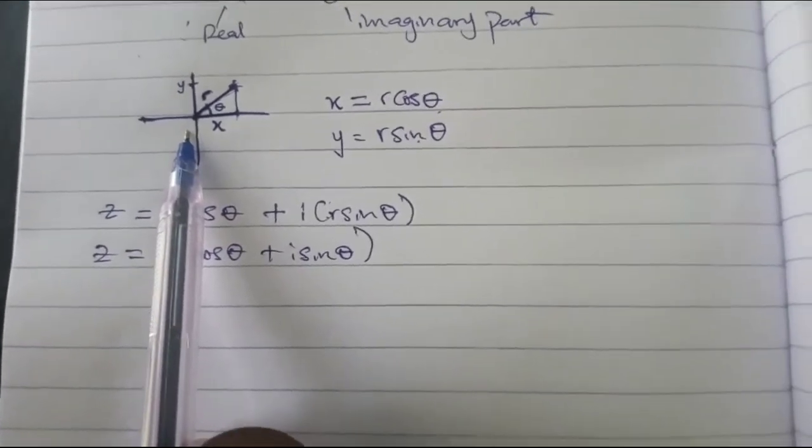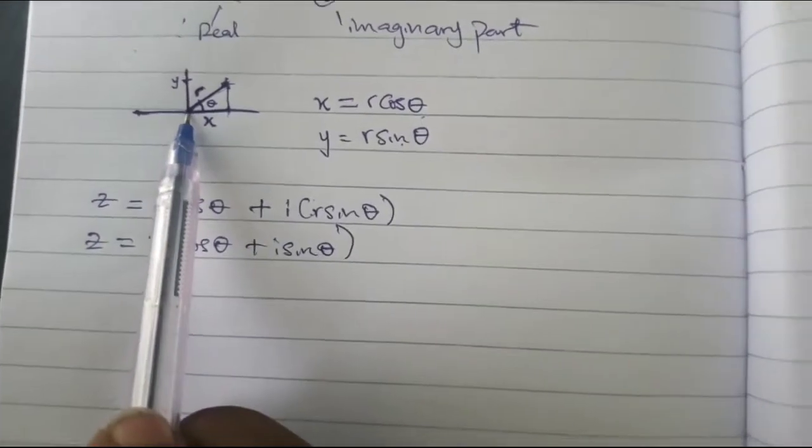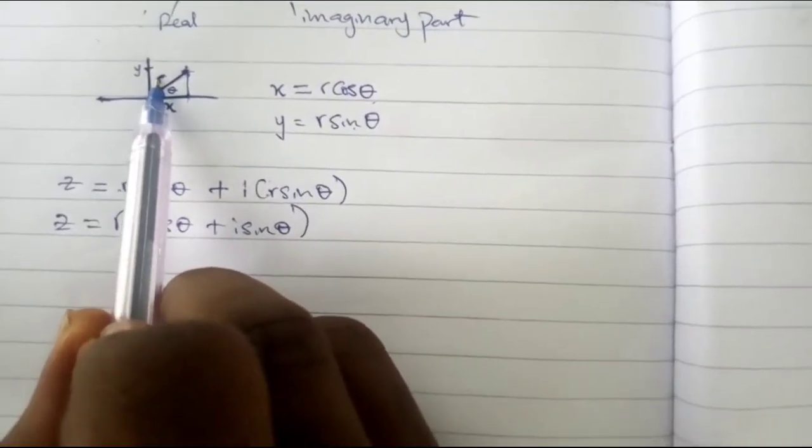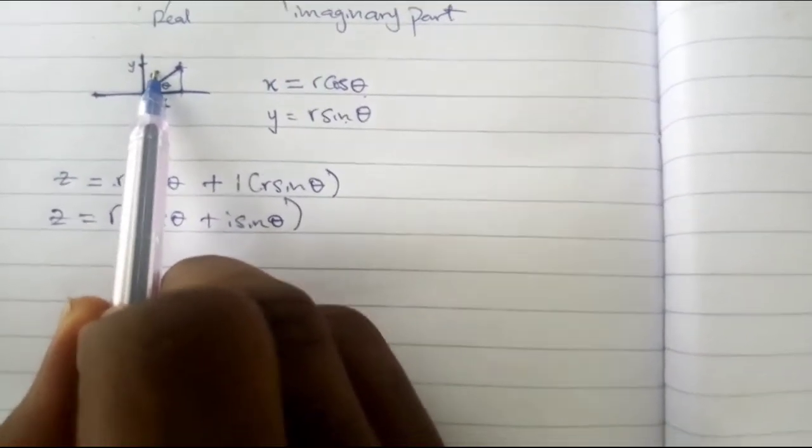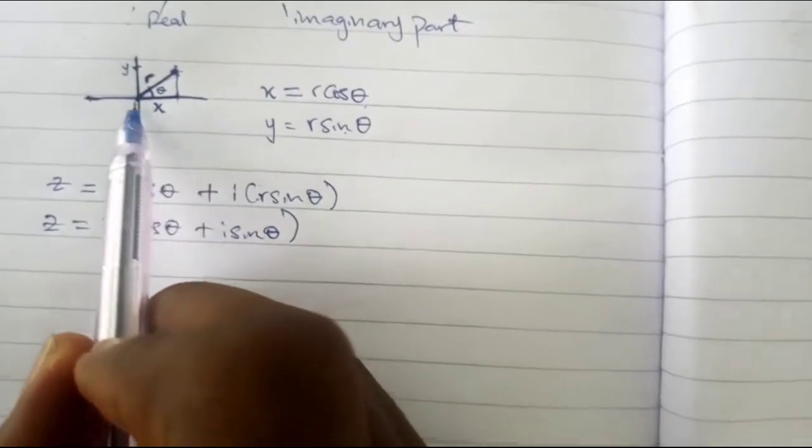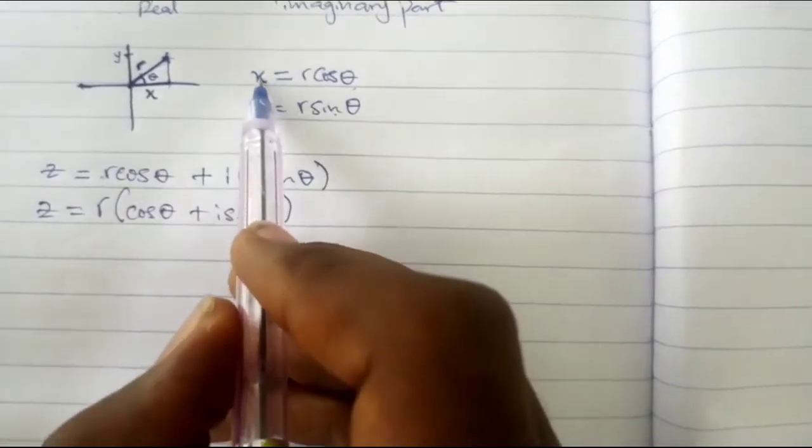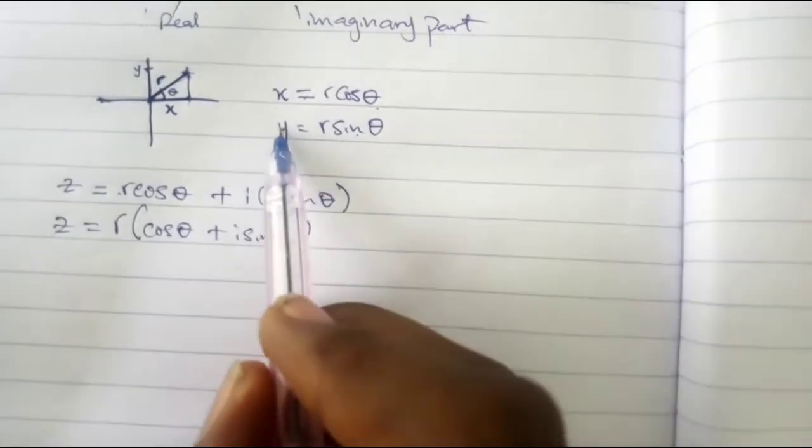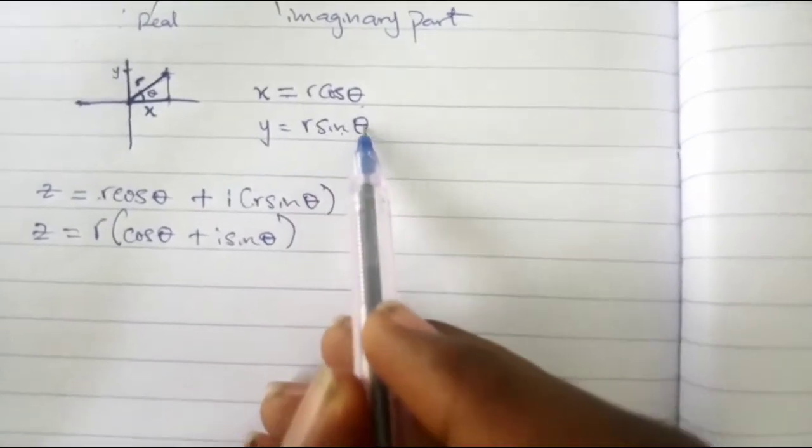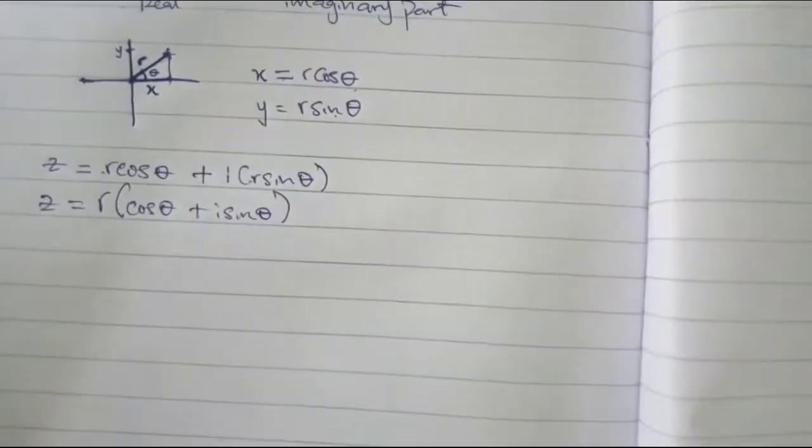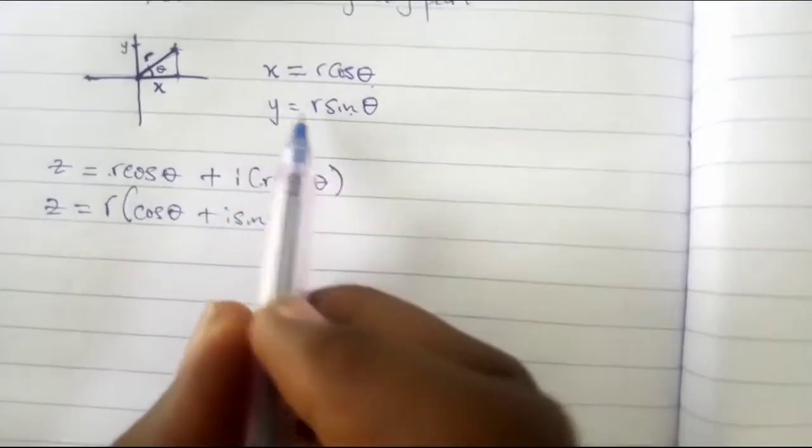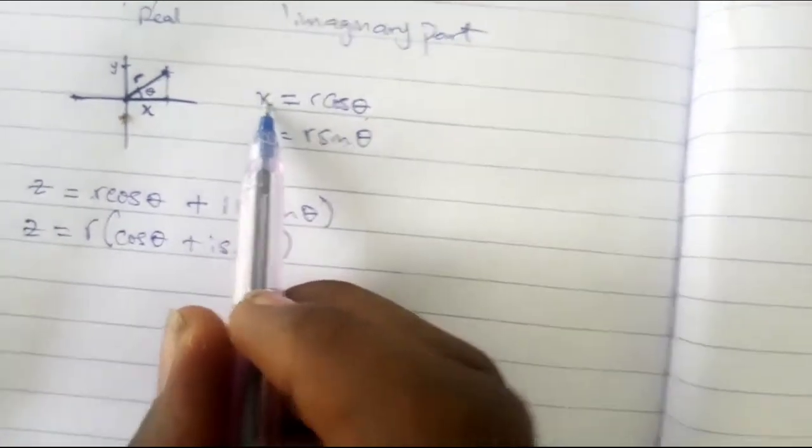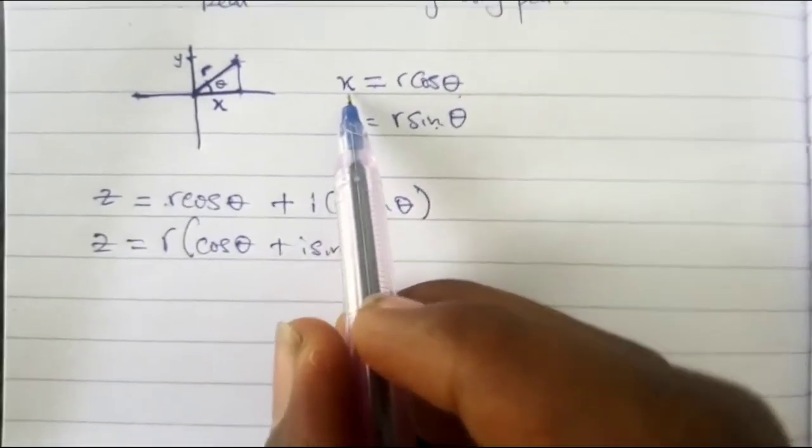Looking at this argand diagram which we have done earlier in this video, r is the magnitude. Resolve this r into its horizontal and vertical components. We'll have the horizontal component x is equal to r cos theta, and the vertical component y is equal to r sine theta.